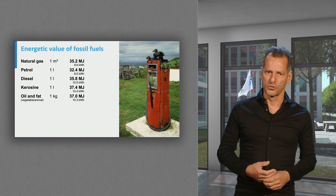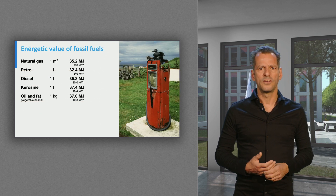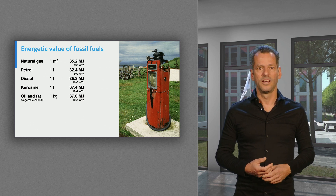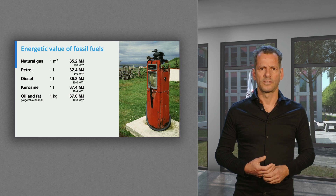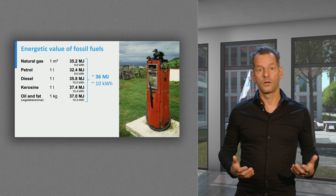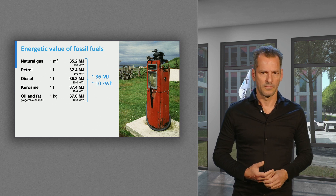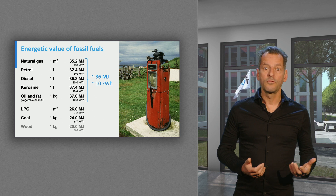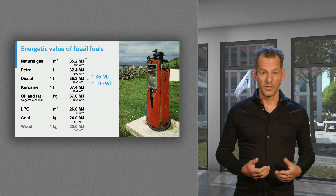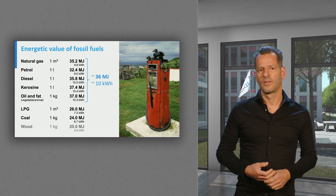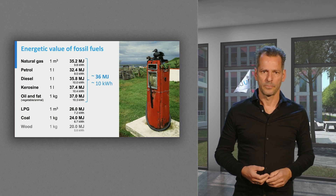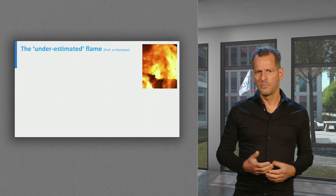Now let's have a look at fossil fuels. If you look at the energy value of natural gas, petrol, diesel, kerosene, or vegetable oils and fats, you might see a common denominator. They're all revolving around 36 megajoules, or 10 kilowatt-hours, as we know from the conversion factor. LPG, liquefied petrol gas, and coal are of a minor energy content — they only contain about 25 megajoules of energy. And wood, not a fossil fuel though, contains 20 megajoules per kilogram.